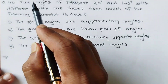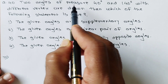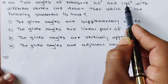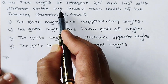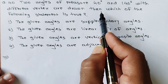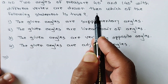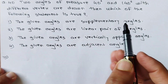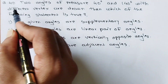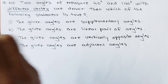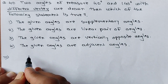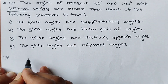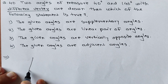See question number 40: Two angles of measure 40 degrees and 140 degrees with different vertices are drawn. Then which of the following statements is true? The important given condition is different vertex. One angle is 40 degrees and the other angle is 140 degrees, with different vertices.